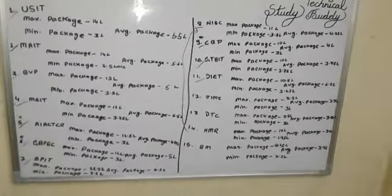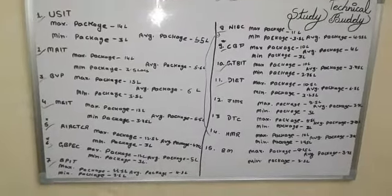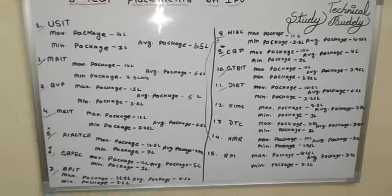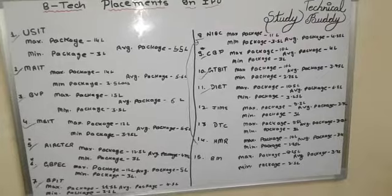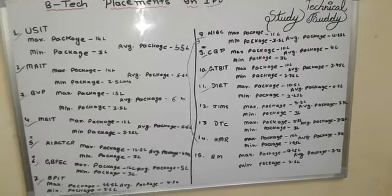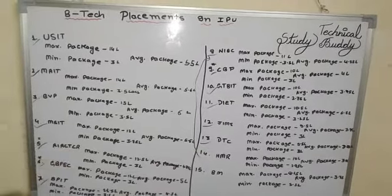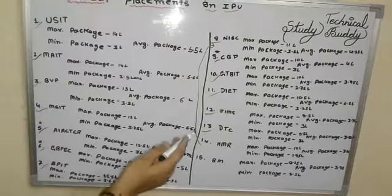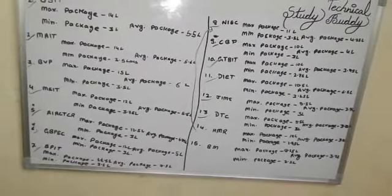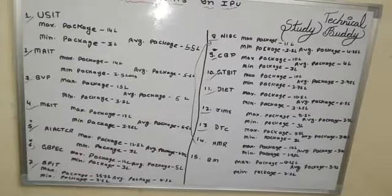For the Tool branch, students who don't get placed in companies often start their own startups or factories in tool engineering and start their own work. Next is your IPU campus college. Their maximum package is 9.5 lakhs, average is 3.7 lakhs, and minimum is 3 lakhs. Students in these non-main-campus colleges face difficulties as the colleges are farther away and fewer companies reach them, mostly startups.